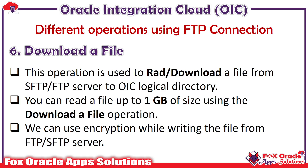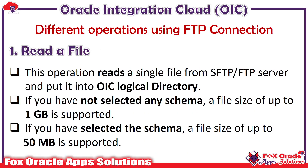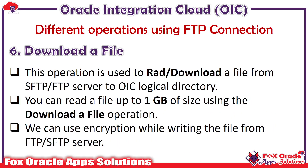The last operation is download a file. As mentioned earlier, read a file allows downloading up to 50 MB when a file structure like CSV is provided. However, download a file can read a file from the SFTP server up to 1 GB of size even when a file structure is provided. So if you need to read a structured file larger than 50 MB, you should use the download a file operation.